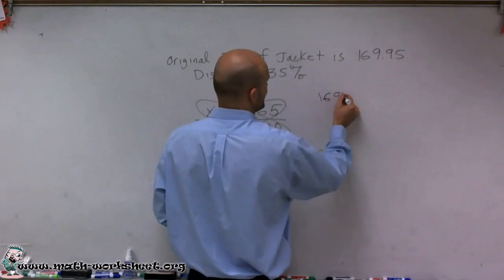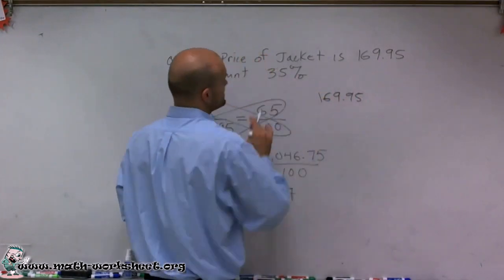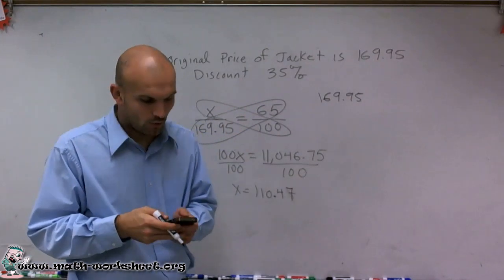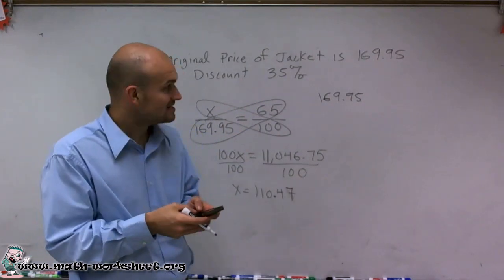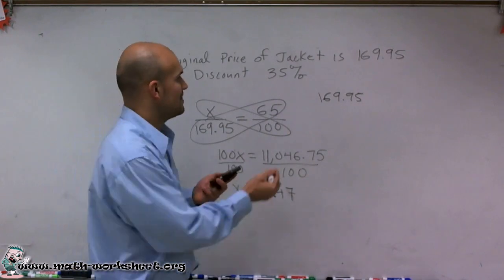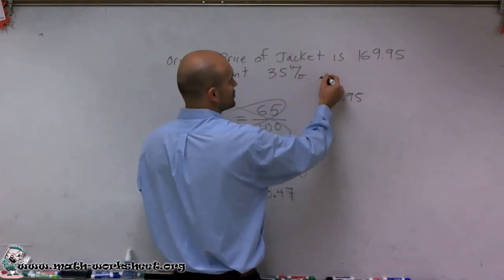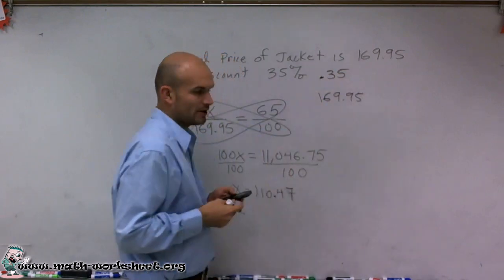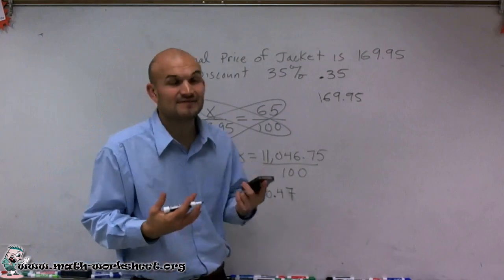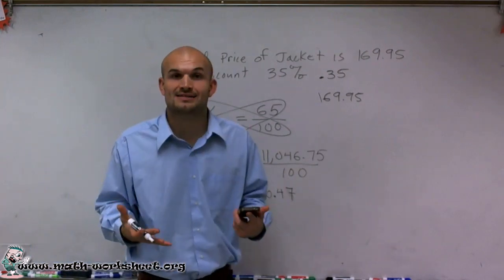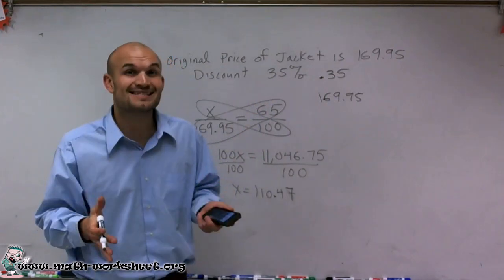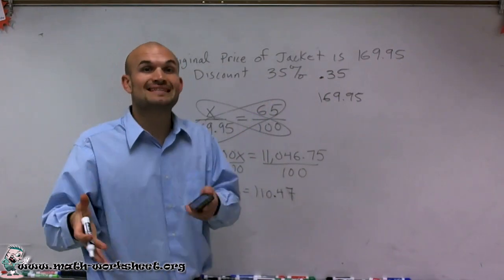If I was going to do 169.95 and I say there's a discount of 35%, what you could do to find the amount discounted is take 169.95 and then convert this to a decimal, which would be 0.35. So if I multiply that by 0.35, what I'm going to get is $59.48. Now that's not the price of the jacket at 35% discount. That's the amount that we're going to discount.